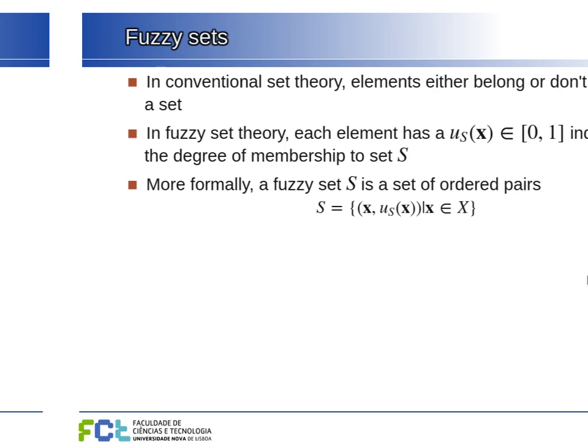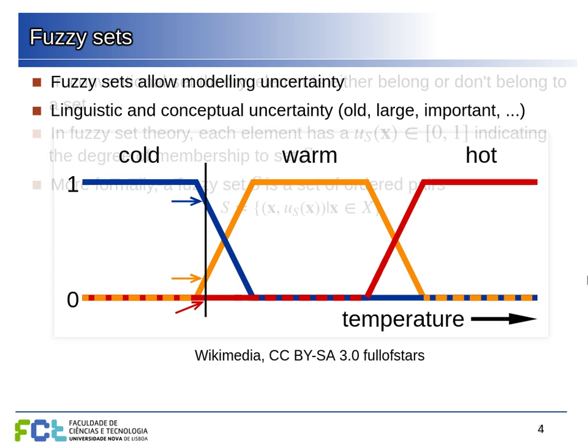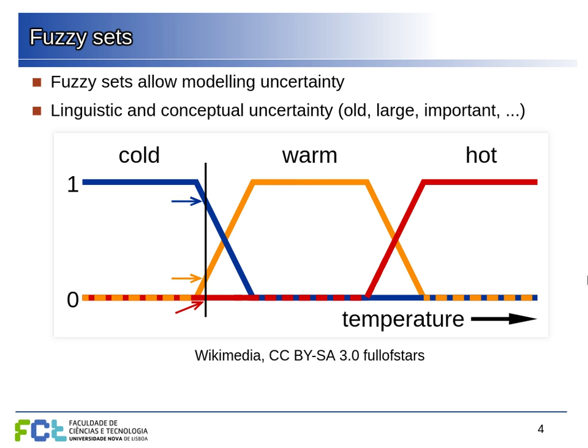A fuzzy set is a set where each element has a continuous membership value that varies from zero to one, indicating how much the element belongs to that set. More formally, a fuzzy set is a set of pairs of the element and its membership function value. Consider an example where our elements are different temperature values and our sets are things like cold, warm, and hot.